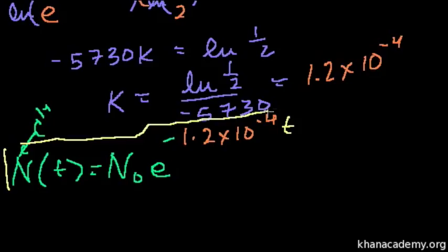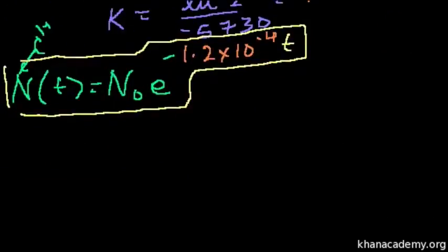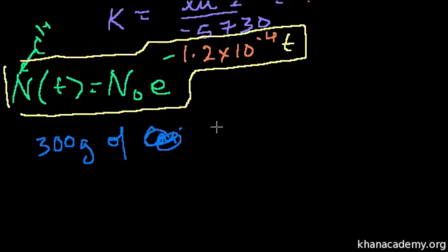If we were doing this for some other element, we would use that element's half-life to figure out how much we're going to have at any given period of time, to figure out the k value. So let's use this to solve a problem. Let's say that I start off with 300 grams of carbon-14. And I want to know, how much do I have after 2,000 years?